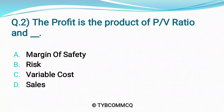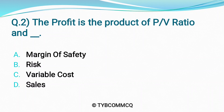Question No. 2: The Profit is the product of PV ratio and ___. Option A: Margin of Safety. Option B: Risk. Option C: Variable Cost. Option D: Sales. The correct option is Option A — Margin of Safety.